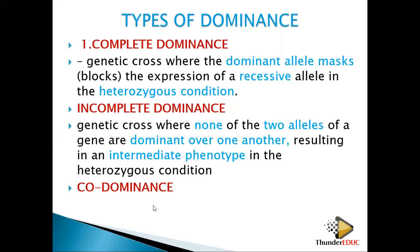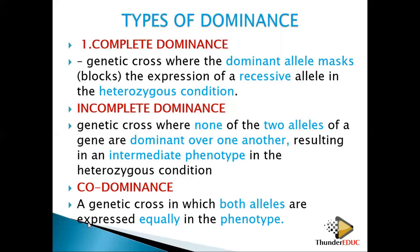Then you have co-dominance. 'Co' means together — two things existing at the same time with the same power, both expressed at the same rate. For example, crossing white and black produces a mixture of white and black, expressed together in the phenotype. It means both alleles are dominant and their dominance is expressed in the phenotype at the same time. Co-dominance is a genetic cross in which both alleles are expressed equally in the phenotype.